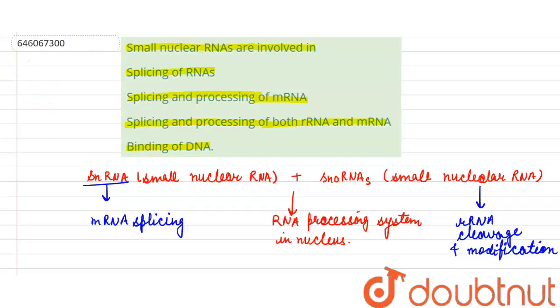So if we discuss the options, first option is splicing of RNA which is incorrect. Second option is splicing and processing of mRNA which is also wrong.